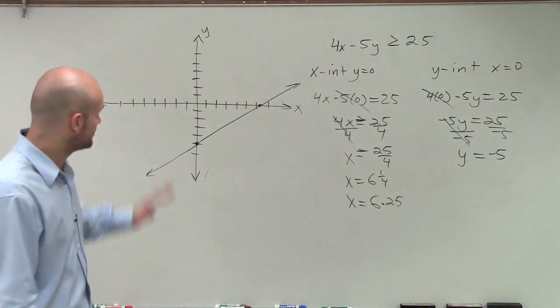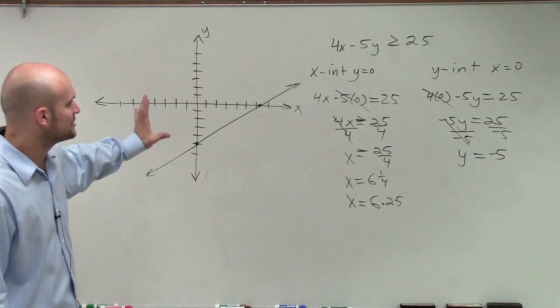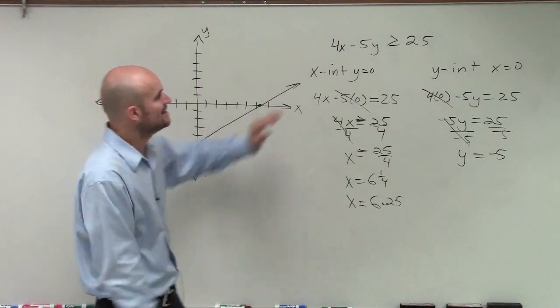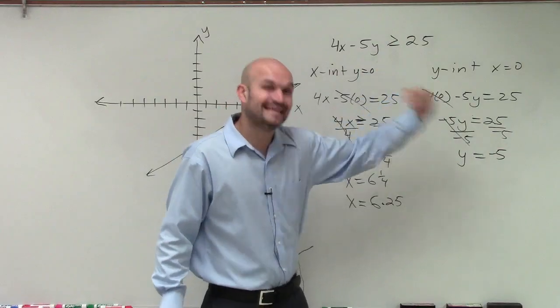Now, the last thing we need to be looking at. So there's my graph. Now, I need to determine where is the shading. Well, first of all, actually, before I get to the shading, we want to make sure our boundary line is correct. Since it said it's greater than or equal to, I know that equal, we're going to have a solid line.